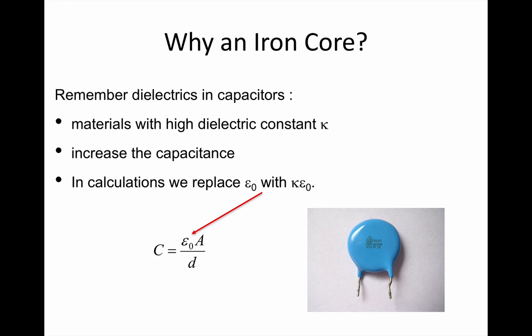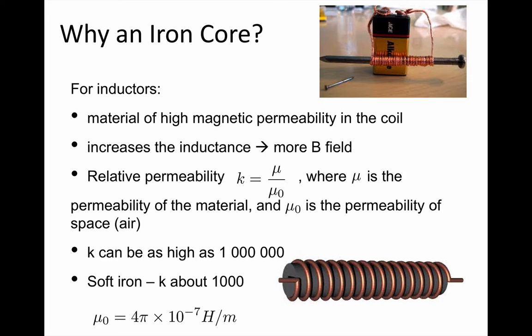Well, it's the same idea that we saw in capacitors, where we were looking at the fact that you can put a material with a high dielectric constant between the plates, and that increased the capacitance. So we looked at the dielectric constant kappa for different materials, and that was a multiplier, really, so that instead of using epsilon zero in equations for capacitance, you replaced it with kappa times epsilon zero, and so it made the capacitance much higher.